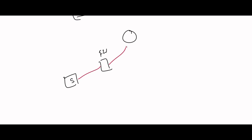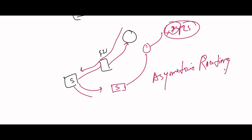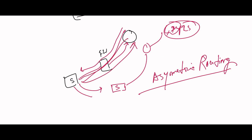There is one very interesting scenario: a server connects to a firewall, but the server has another interface connected to a switch and a router going to MPLS. Traffic comes in from one path but the response comes back via a different path. This is called asymmetric routing, as opposed to symmetric routing where traffic goes and returns on the same path.